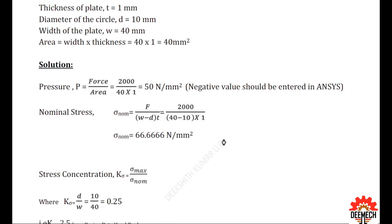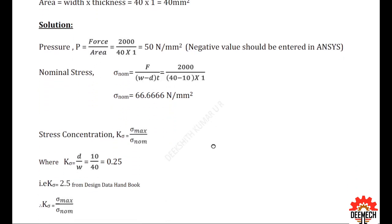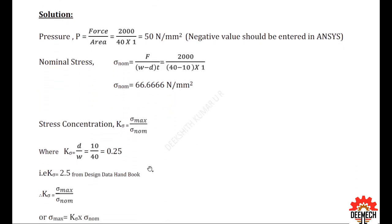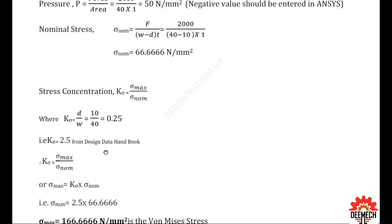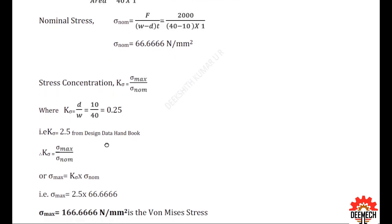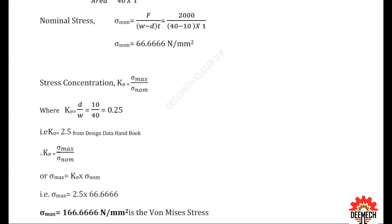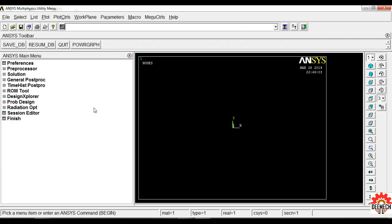Next we need to find the nominal stress and stress concentration factor — you can refer to the design data handbook for this calculation. Then we find the maximum stress, and the answer is 166.66 Newton per mm square. You can find all these calculations in the CISA lab manual linked in the description below.